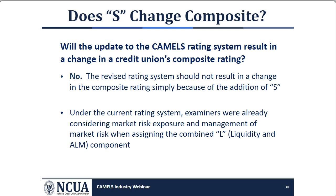Will the update to the CAMELS rating system result in a change in a credit union's composite rating? The manner in which examiners assign the composite rating has not changed. The composite rating is not a function of an arithmetical formula or rigid weighting of numerical component ratings — elements of subjectivity and examiner judgment, especially in qualitative assessments, remain essential. Furthermore, the revised rating system generally should not change the composite rating assigned to a particular credit union simply because of the addition of the S component.